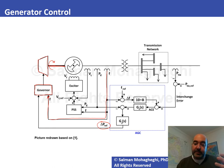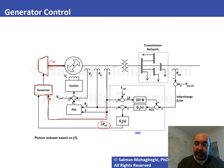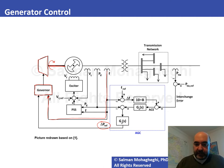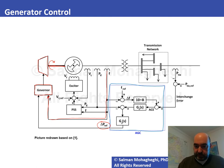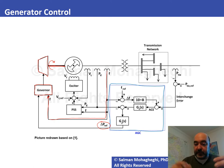If Δ P_ref is positive, the generator is forced to inject more power into the grid; if negative, it reduces active power output — both achieved by making the prime mover go faster or slower. This Δ P_ref comes from the AGC (Automatic Generation Control) system, which looks at frequency deviation from the reference value of 60 Hz and also monitors scheduled power transactions through tie lines connecting different systems.